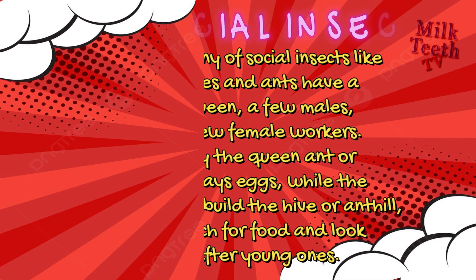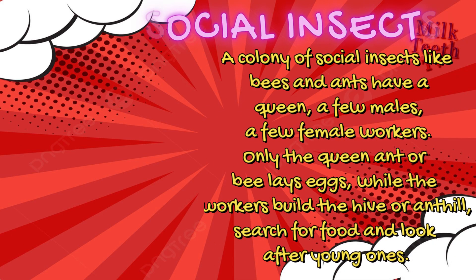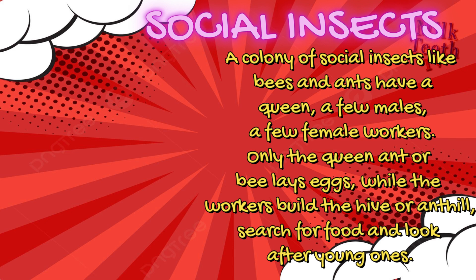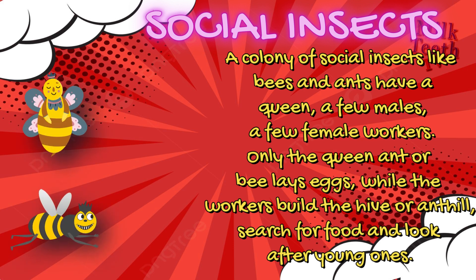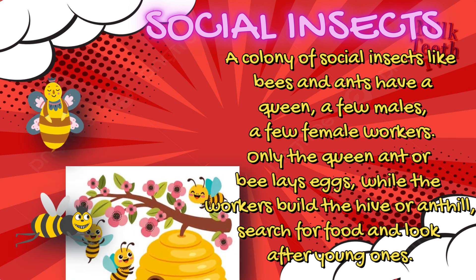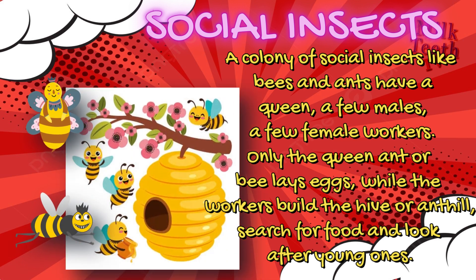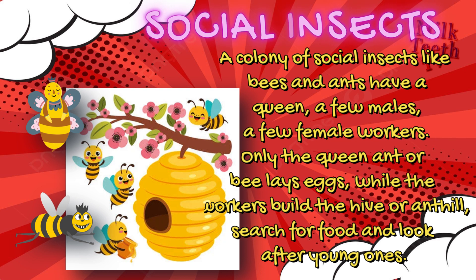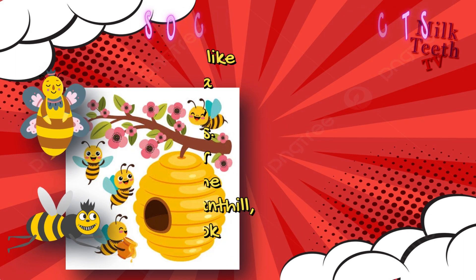A colony of social insects like bees and ants has a queen, a few males, and a few female workers. Only the queen ant or bee lays the eggs, while the workers build the hive or anthill, search for food, and look after the young ones.